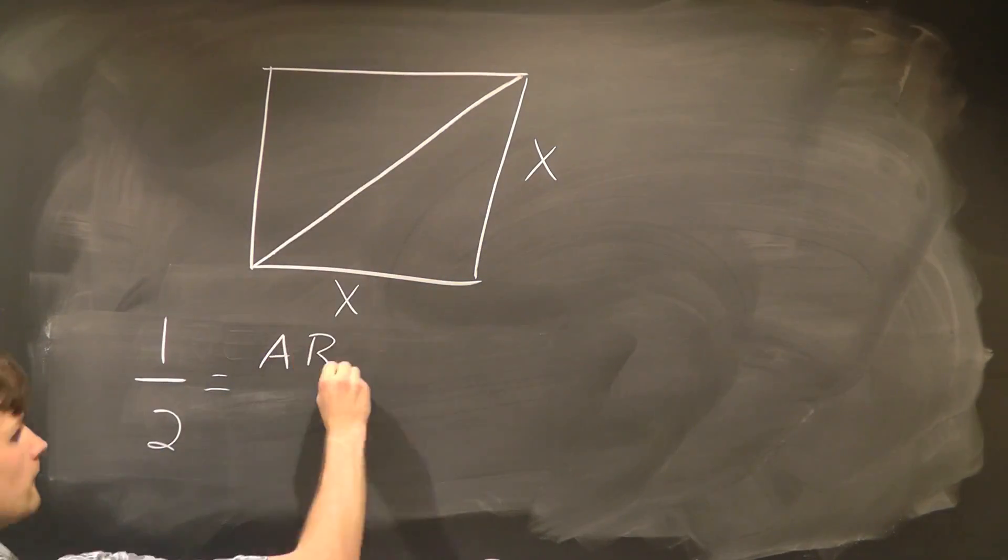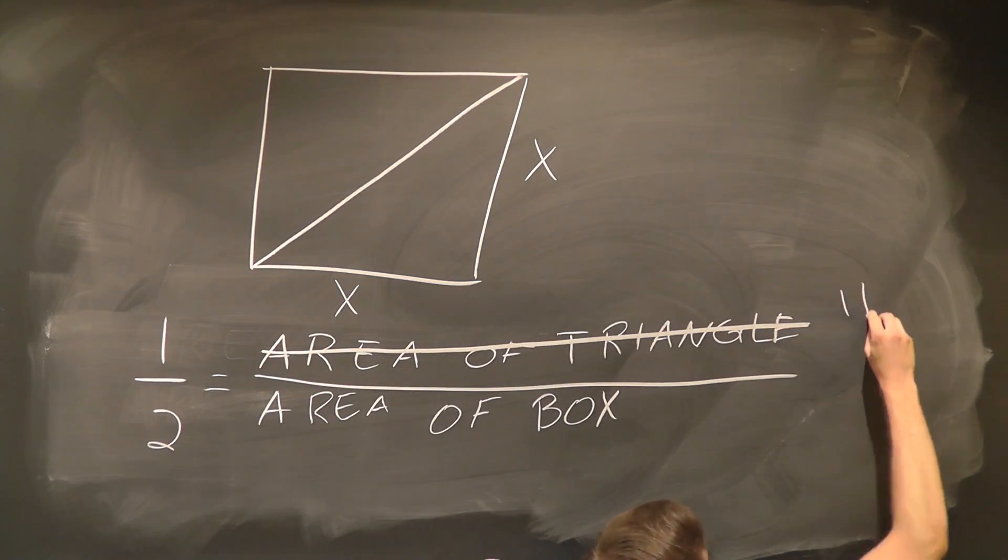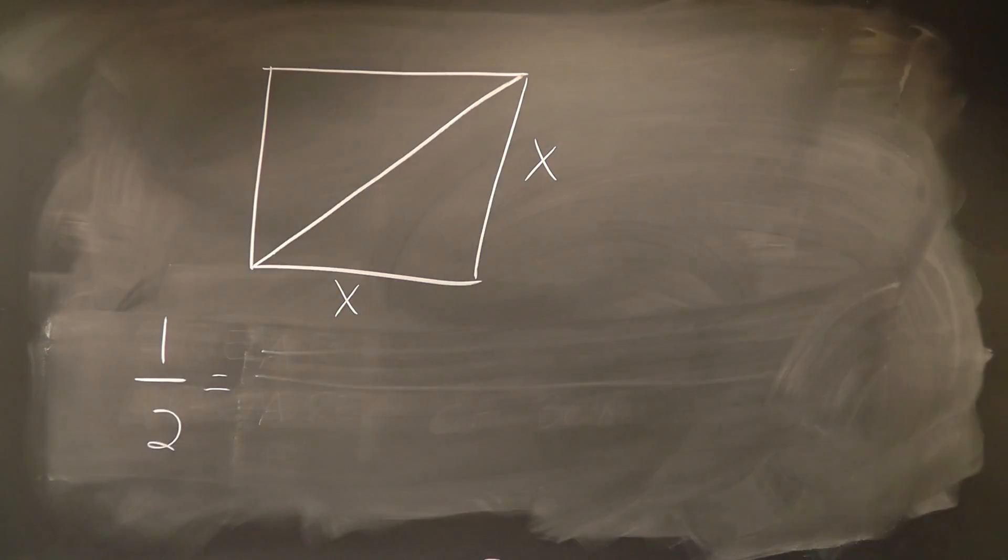Well, in this case, it's easy. We simply take the area of the triangle and divide it by the area of the box. But wait, we're looking for the area of the triangle, so we can't exactly use that. There must be some other way to calculate this ratio.